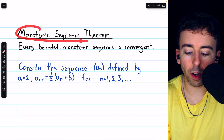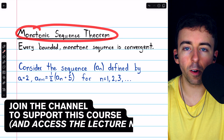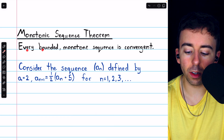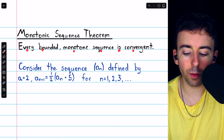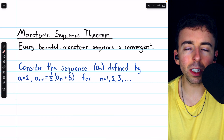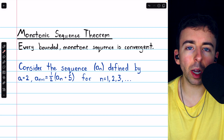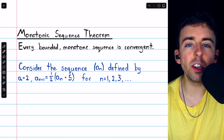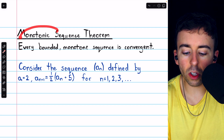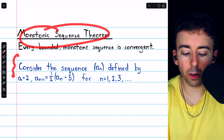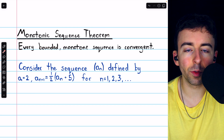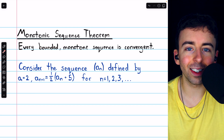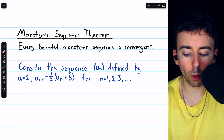We previously proved the monotonic sequence theorem, link in the description. This theorem states that every bounded monotone sequence is convergent. This is a particularly useful theorem because it gives us a way to establish that a sequence is convergent without even knowing its limit. Today, we'll use this theorem to show that a recursively defined sequence is convergent, and then with that information, we'll be able to find its limit. Here's the sequence in question.